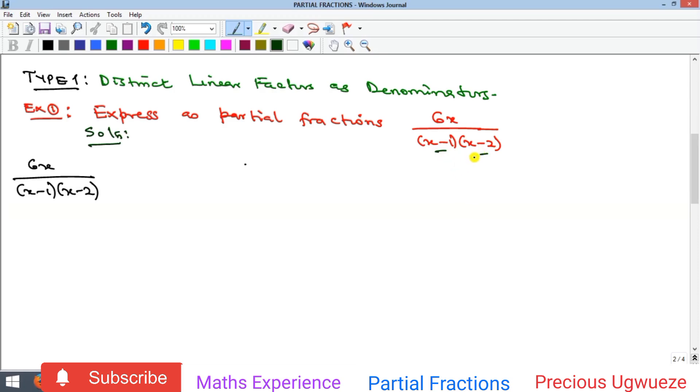Here we have two linear factors as denominators, which means we are going to have two partial fractions. Let's quickly look at that.